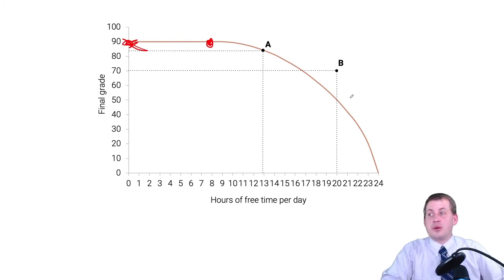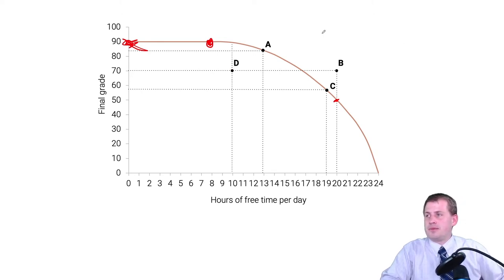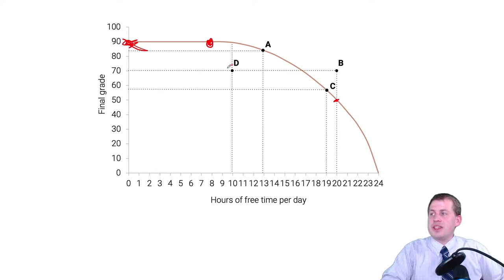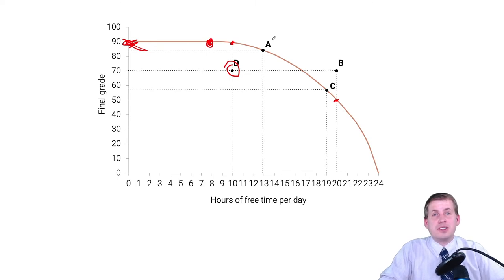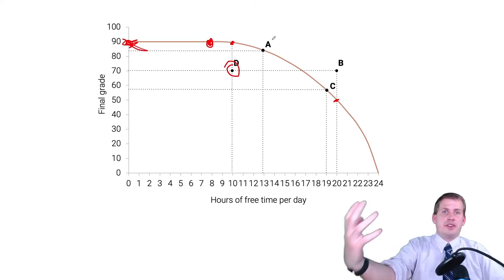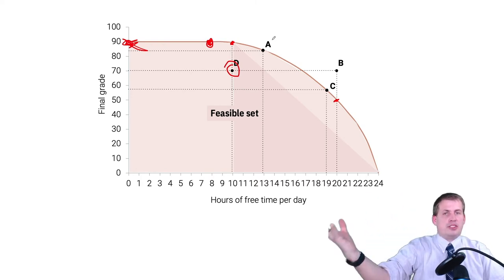Point A on the frontier — 13 hours of free time, grade of about 85 — is feasible and doable. Point B — 20 hours of free time and a grade of 70 — is outside the feasible set. With 20 hours of free time he'd only get about a 50, not a 70. Everything on the production possibility frontier represents the limit of what he can achieve given his time constraints.